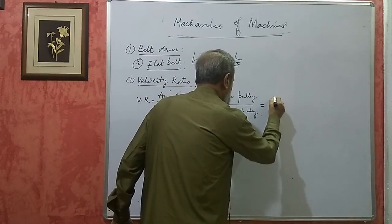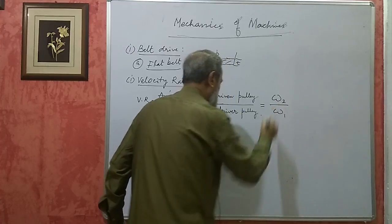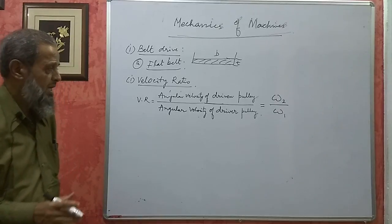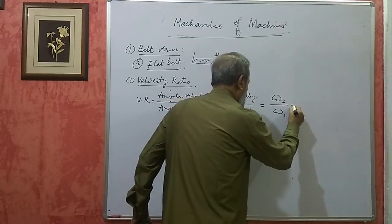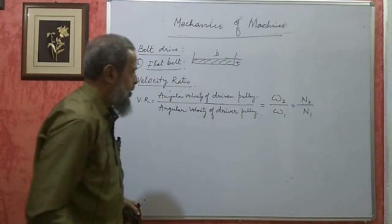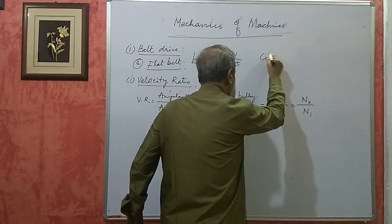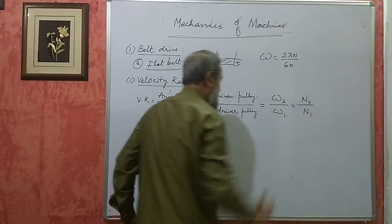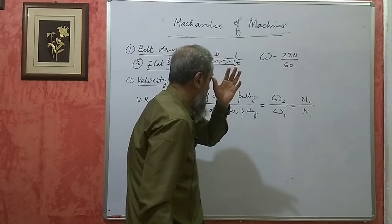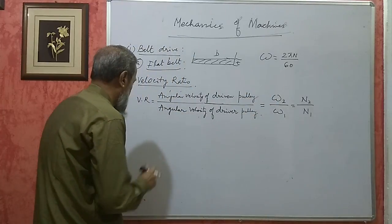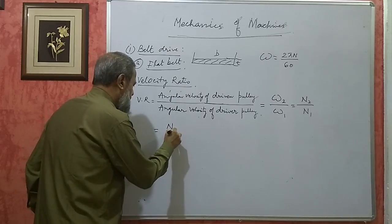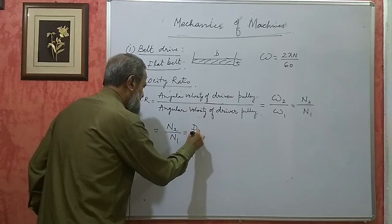The velocity ratio equals omega-2 by omega-1, which is also equal to N2 by N1 (speed in RPM), because omega equals 2πN/60 radians per second and the 2π/60 terms cancel. We can prove that this velocity ratio N2/N1 equals D1/D2, meaning N1·D1 = N2·D2, when belt thickness (t) and slip (S) are both neglected.